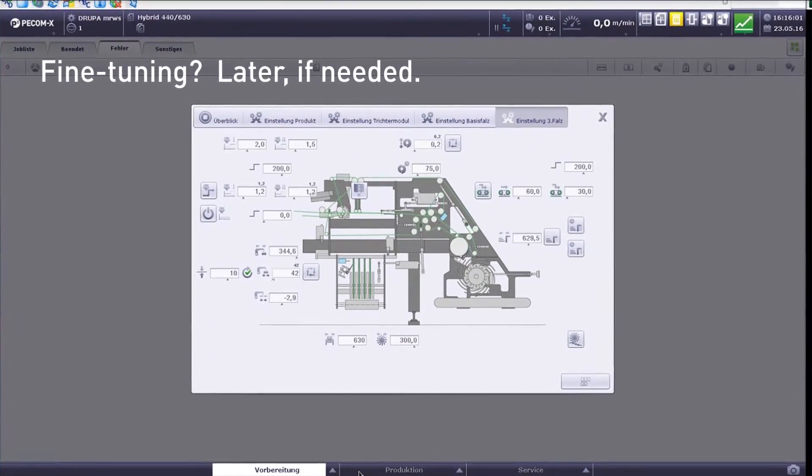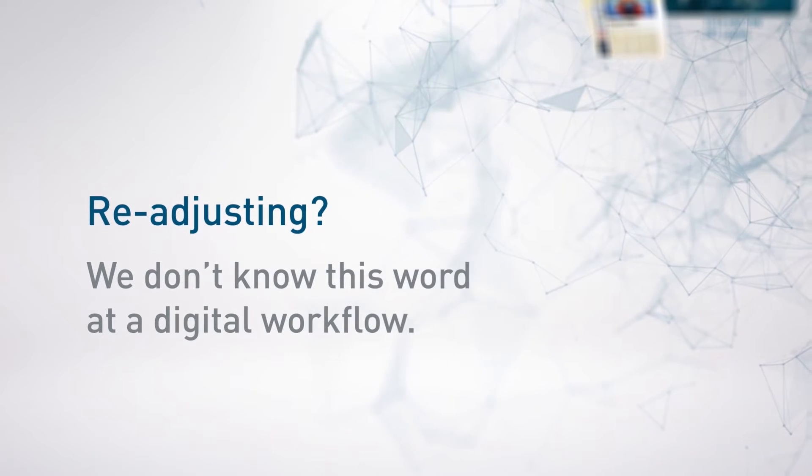The first five newspapers are produced. We can run 300 meters per minute now, the maximum speed. The press automatically handles all adjustments without any additional effort.